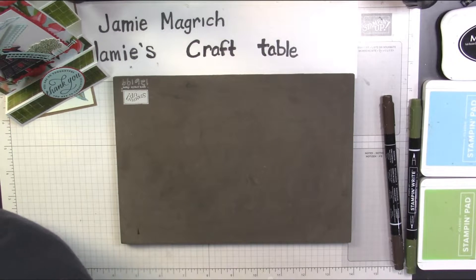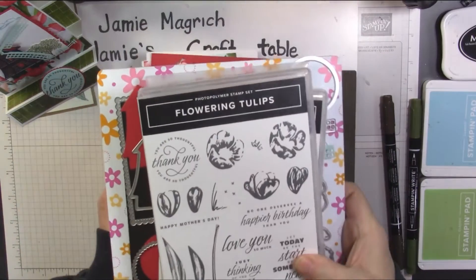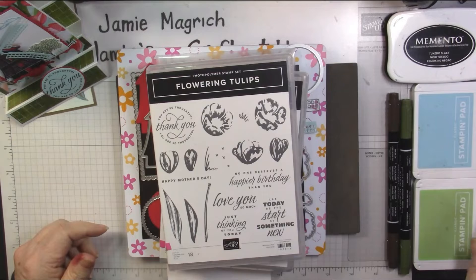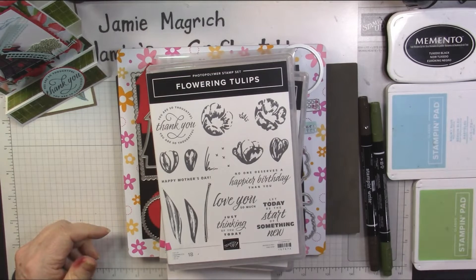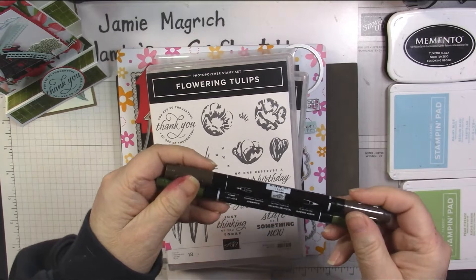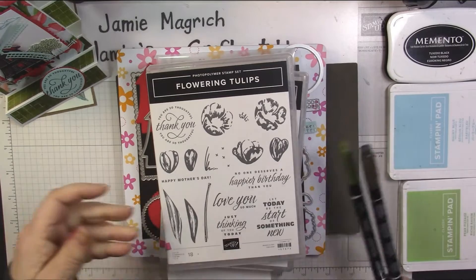This uses quite a lot of supplies. I'm going to start over here. I have Memento Tuxedo Black, I have Balmy Blue, I have Pear Pizzazz, and then I have two Stampin' Right markers, the regular water base markers. I have an Early Espresso and a Mossy Meadow.